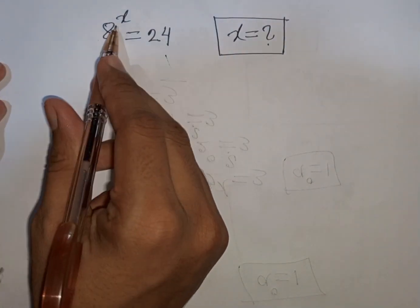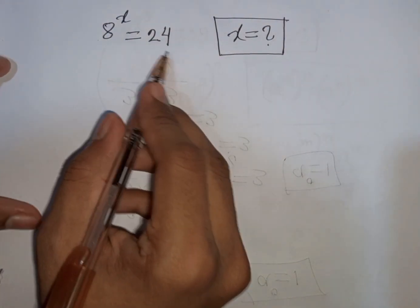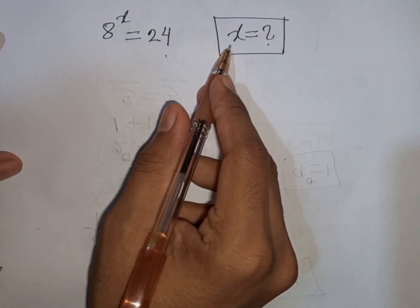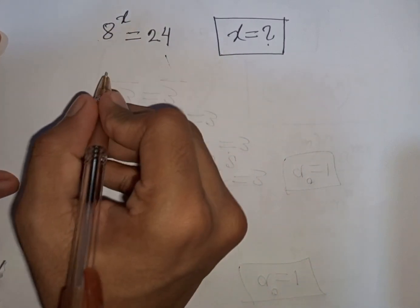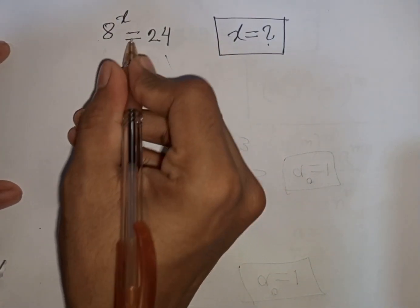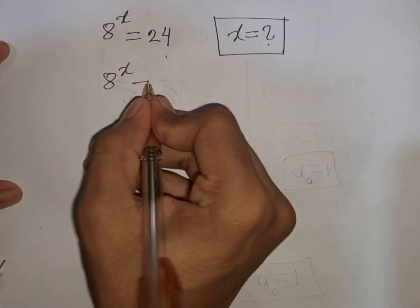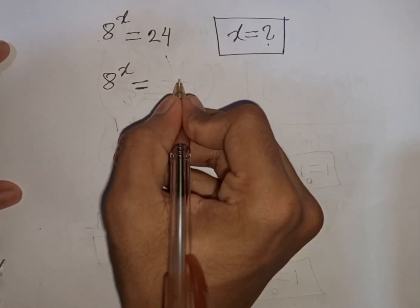How to solve 8 power x is equal to 24? Find the value of x. We have 8 power x is equal to 24.